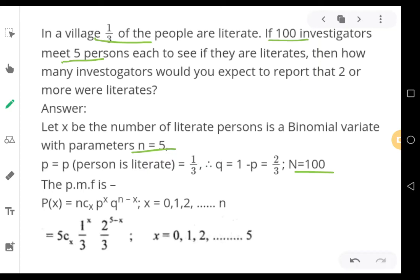So their expected probabilities are P2, P3, P4, and P5. All these should be added: P2 plus P3 plus P4 plus P5. Or alternatively in the reverse manner, you can subtract 1 minus P0 and P1. If you take five samples, there are zero literates, one literate, two people literates, three literates, four literates, five literates.